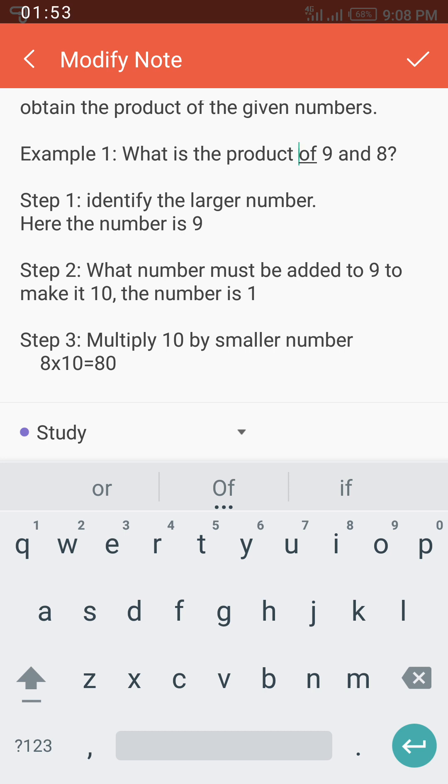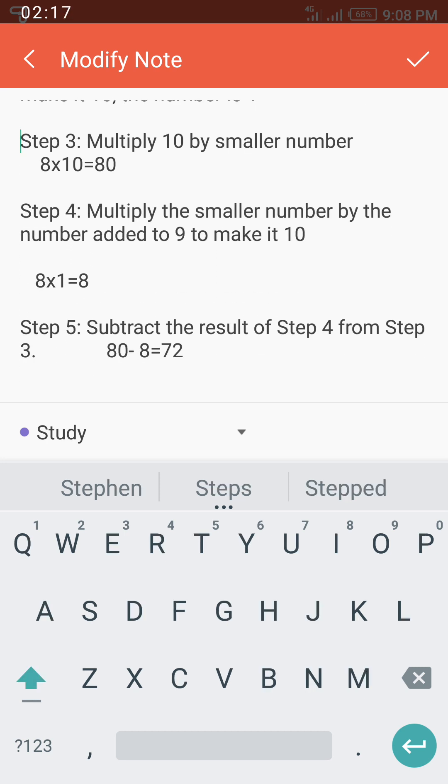Step 3: Now you look for the smaller number and multiply it by 10. The smaller number between 9 and 8 is 8, so we say 8 multiplied by 10 and that gives us 80. Let's look at Step 4.